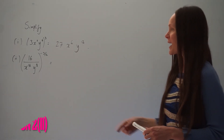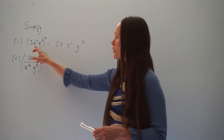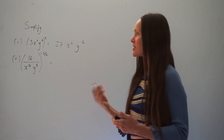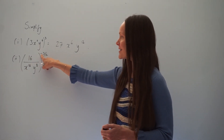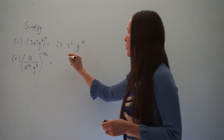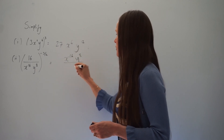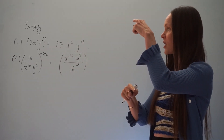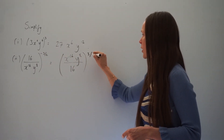In part 2, we have 16 divided by x to the power of 16 times y to the power of 8, and all of this fraction is raised to negative 3 over 2. Just like previously, when you have a fraction and the power outside the brackets is negative, it switches the fraction upside down. So the numerator becomes x to the 16 times y to the 8, and the denominator is 16.